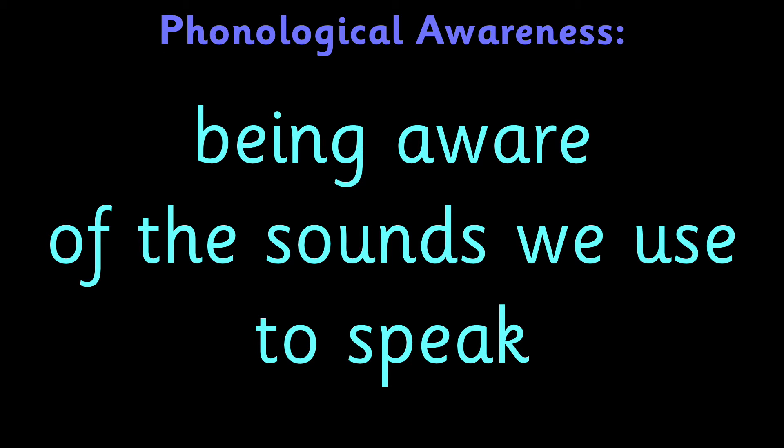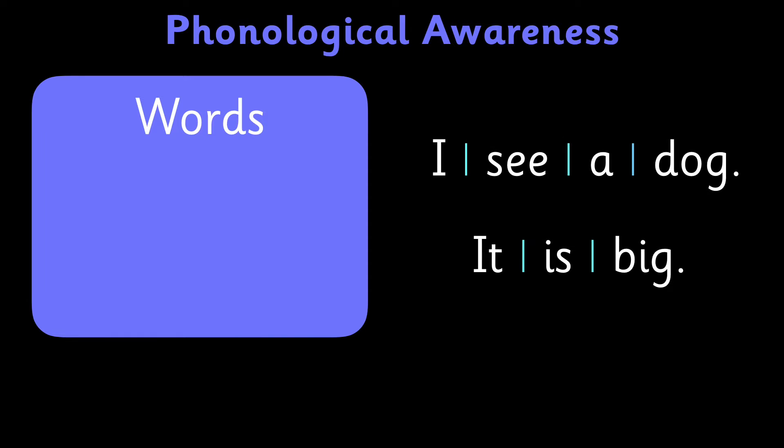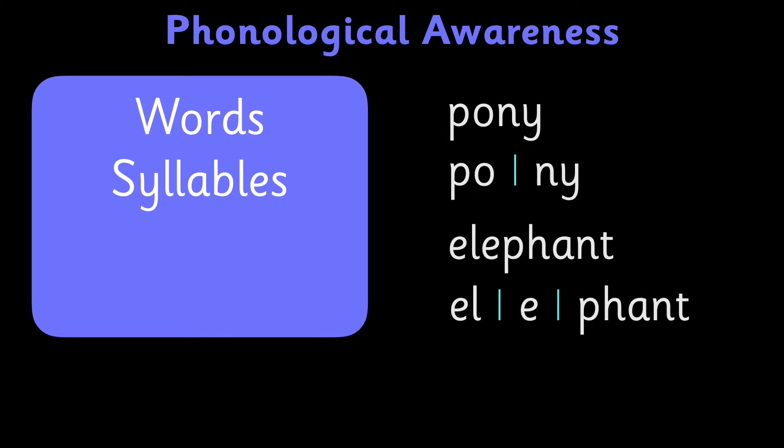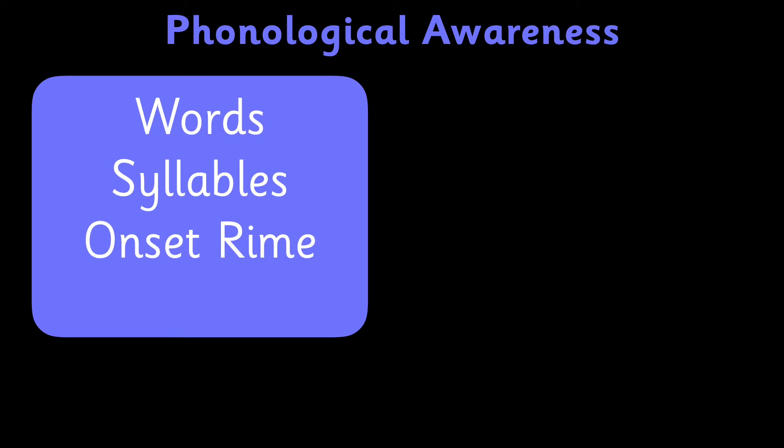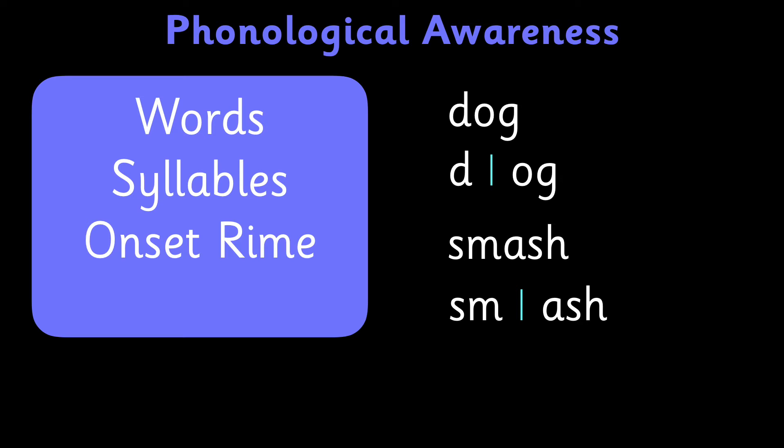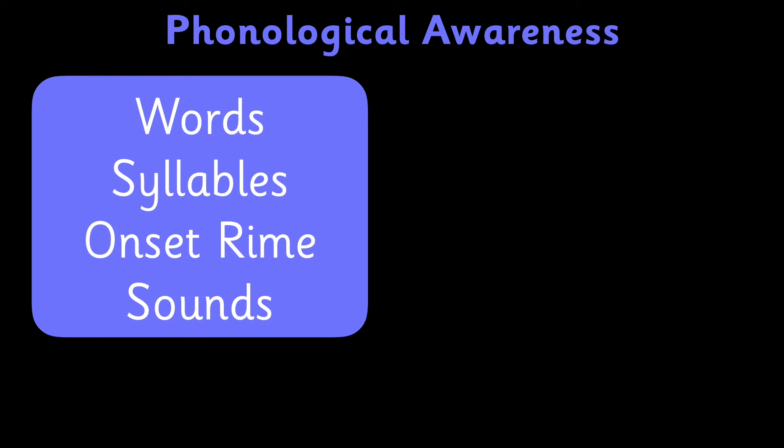There are actually different parts of speech that we can be aware of. Going from big to small: there are words, syllables, onset and rhyme. Onset and rhyme is where we divide a syllable in half — everything before the vowel sound is the onset, and the vowel sound and everything after is the rhyme. So the onset of 'dog' is 'd' and the rhyme is 'og.' The onset of 'smash' is 'sm' and the rhyme is 'ash.' And finally, the smallest part: the individual sounds we use when we speak. The official name for these speech sounds goes back to the word 'phone' — they're called phonemes.